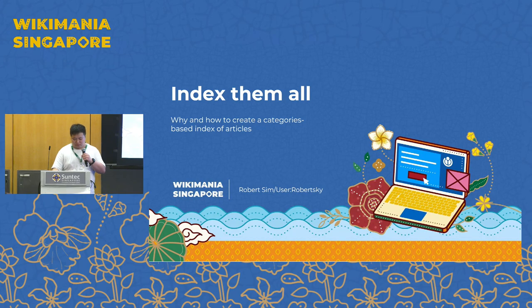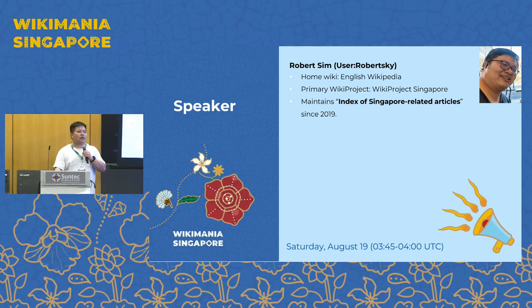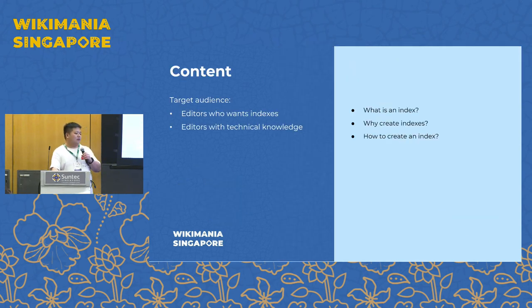Hi, I'm Robert. I'm going to talk about indexing articles on Wikipedia. My home wiki is English Wikipedia, where I work on Singapore-related articles. I've been actively maintaining the index of Singapore articles for the last four years since 2019.